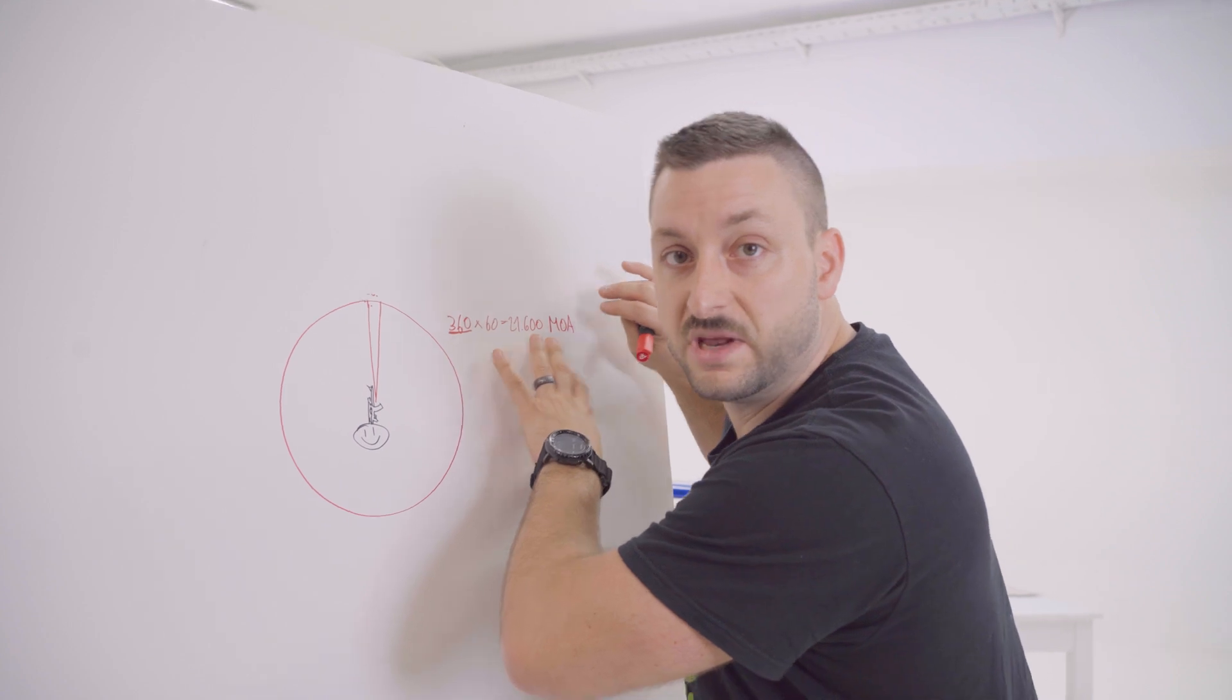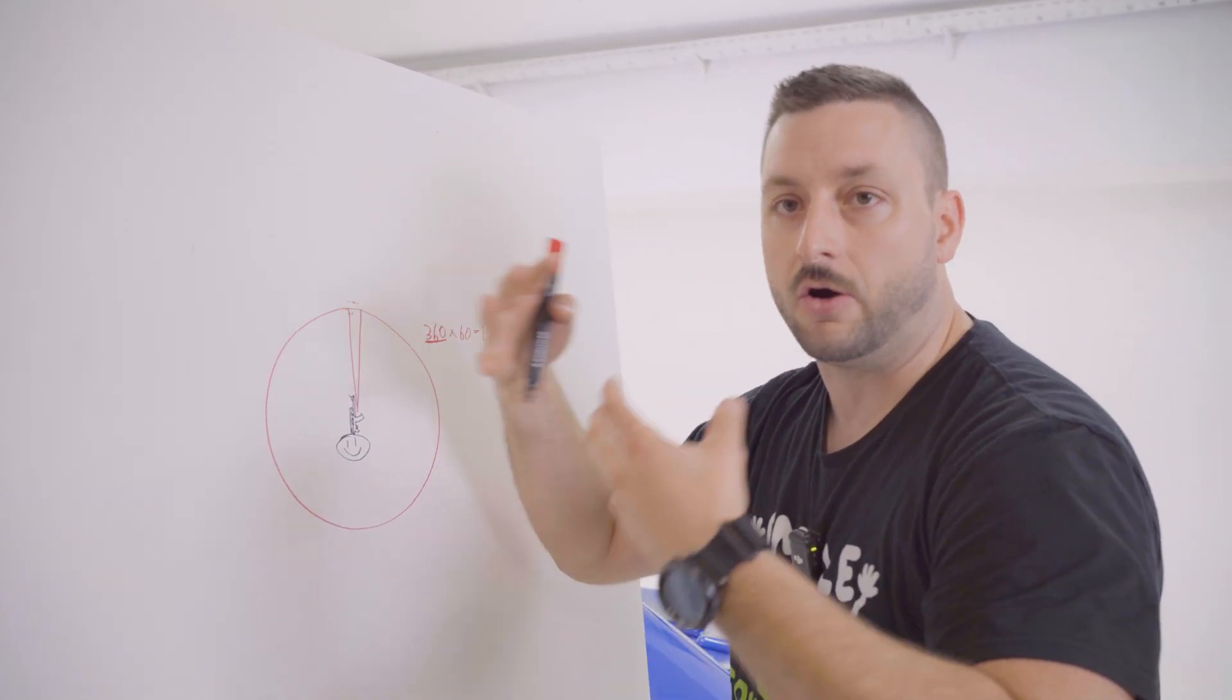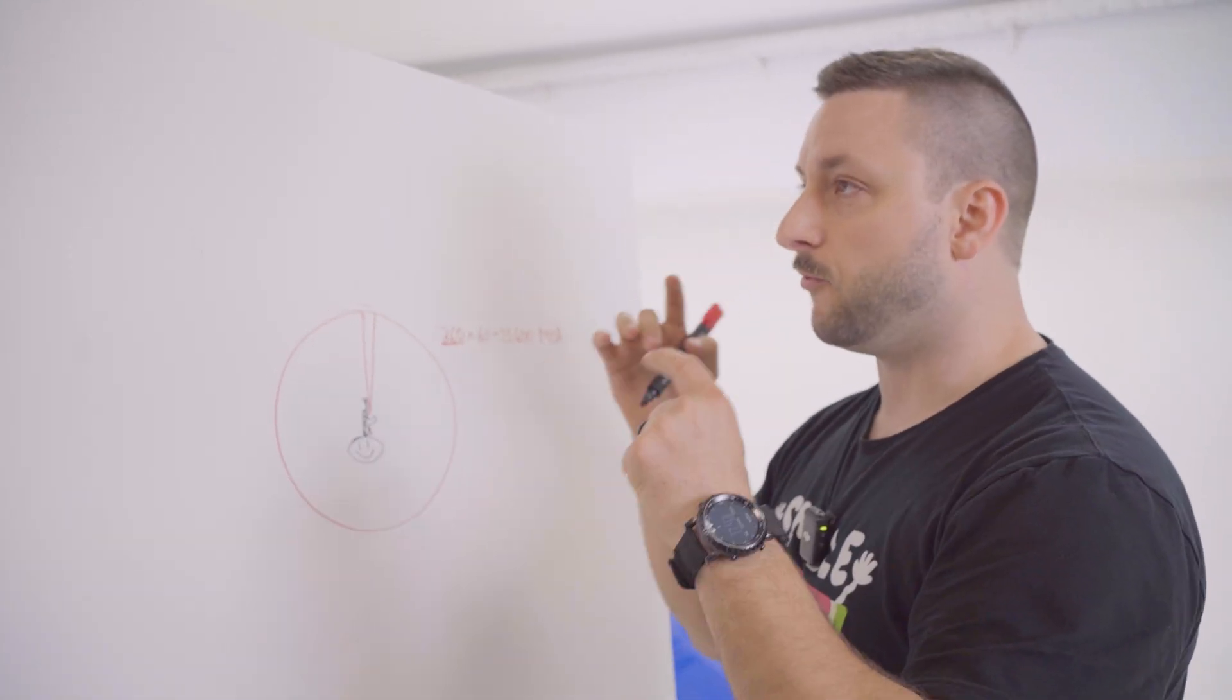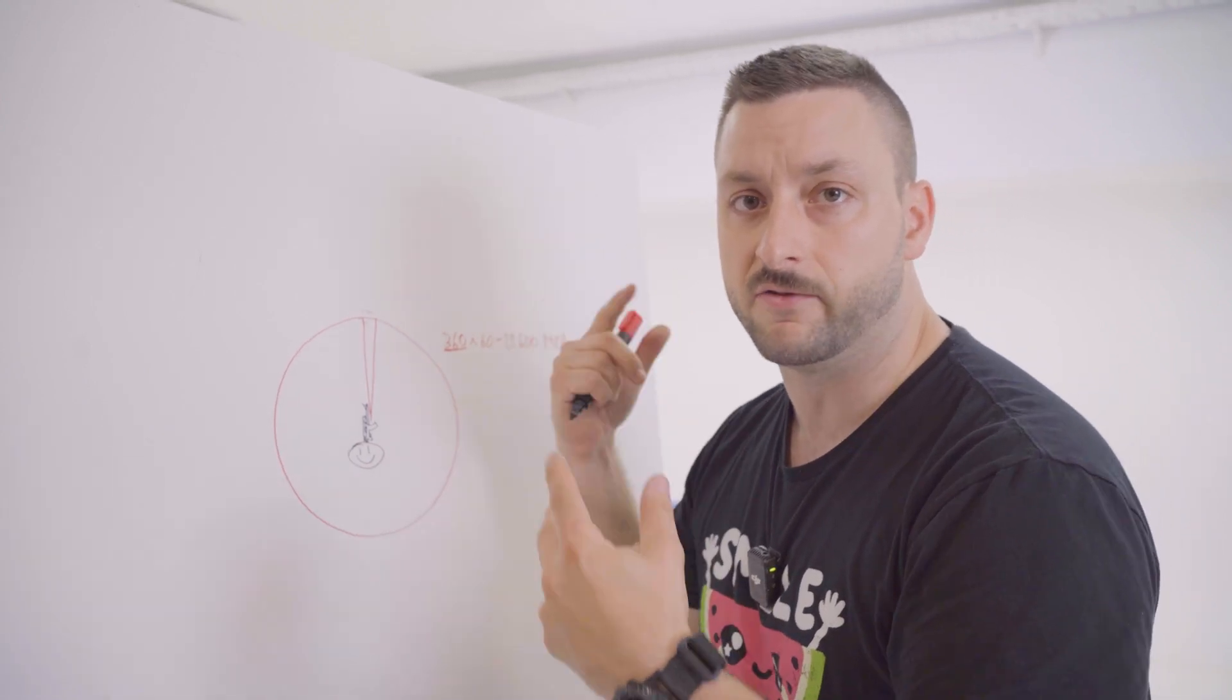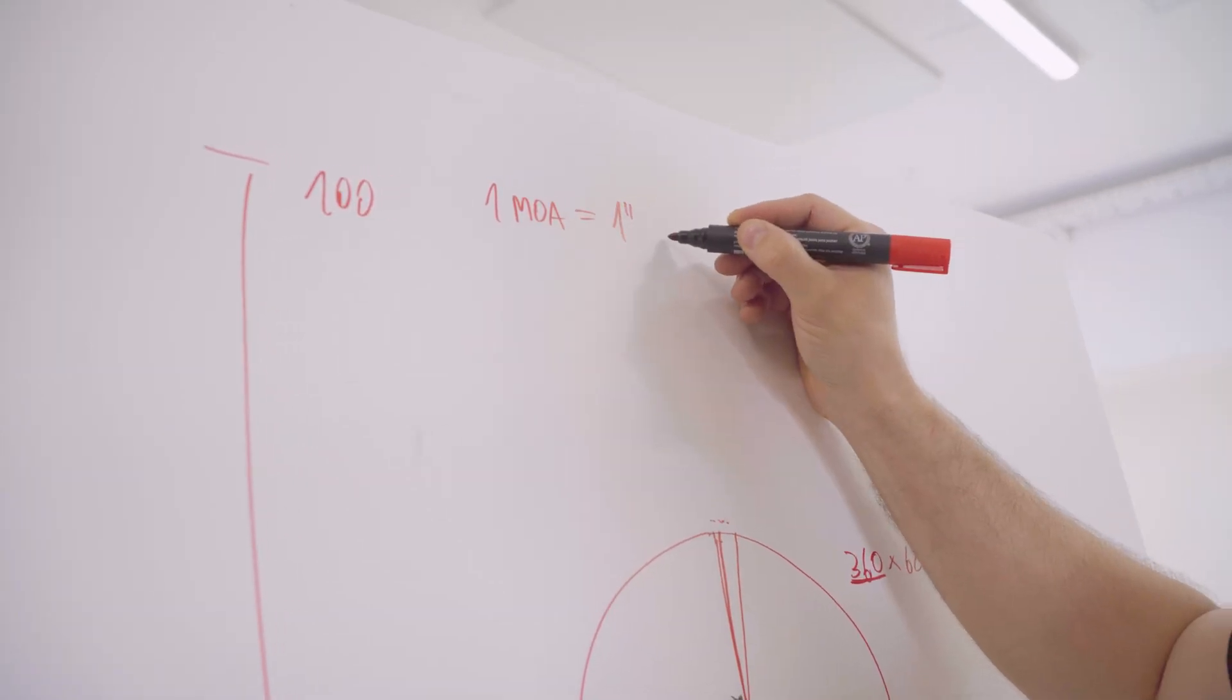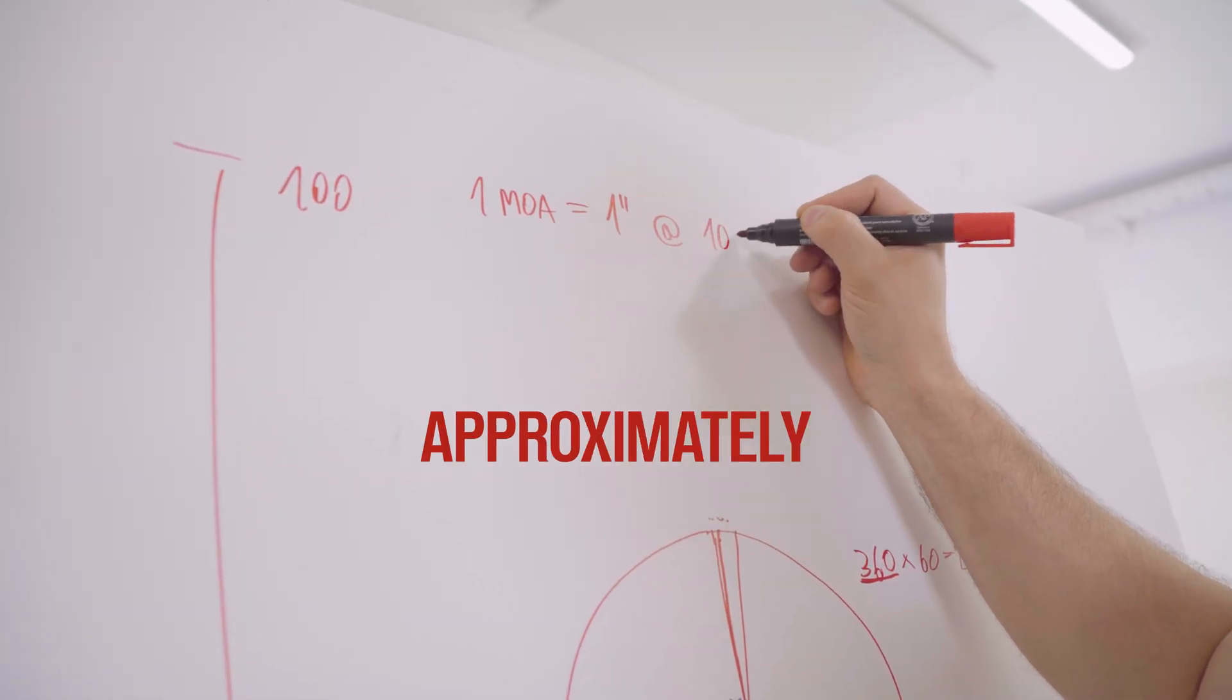Why do we use this minutes of angle to gauge our accuracy? Because of one very interesting and convenient fact. One minute of angle is one inch at 100 yards.